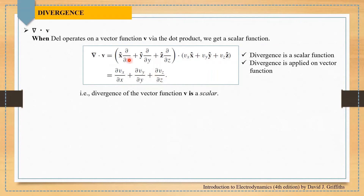In this lecture, we will discuss the basics of divergence and curl of a vector function. Mathematically, del dot v is the divergence of vector function v, and when the del operator operates on a vector function v via the dot product, we get a scalar function.